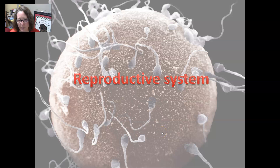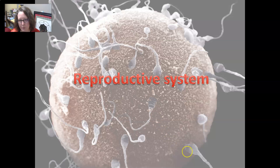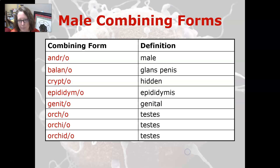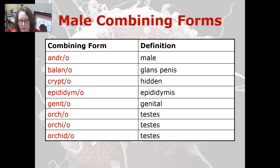Hi, this is Dr. A with your medical terminology video. We're going to talk about the word parts of the male reproductive system. We're going to start with the combining forms: andro means male, balano means glans penis.